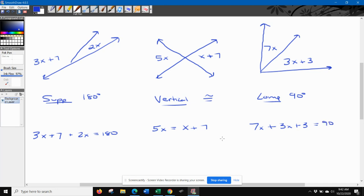Those are the only three types you'll have. Just go ahead and take the information that you're given, write the correct equation. Again, supplementary, they equal 180. Vertical, they're equal to each other if they're straight across from each other. And if it makes a right angle, then you can add them together to make 90.